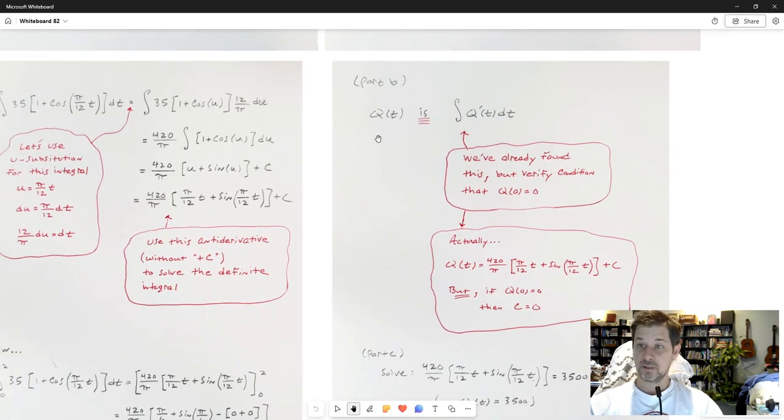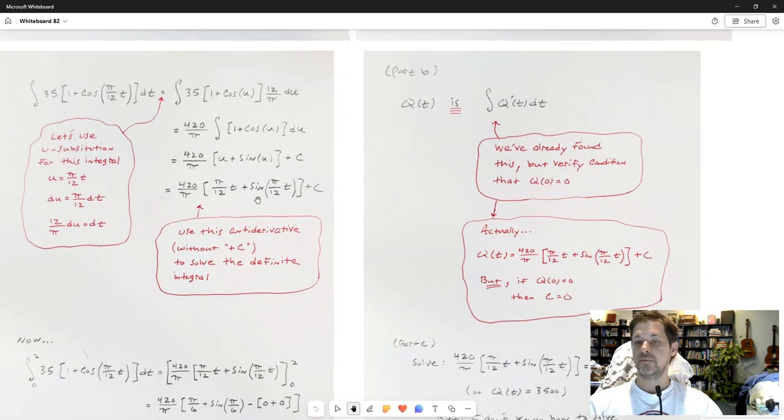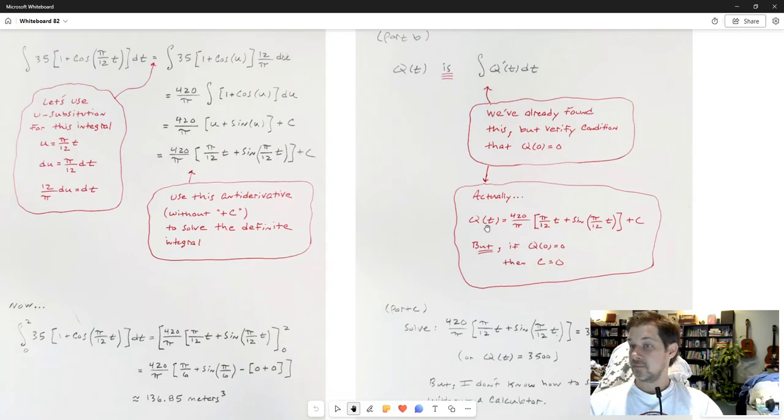If you took the derivative of this, you would. But see that plus c right there, that could be plus any constant. No matter what that number is, you know, I get all this stuff, but plus any fixed number. If that was plus 7, the derivative of this would still give you that. That's why plus c is a generic constant, because no matter what constant I add on the end of this, it will check out as the antiderivative. I'll need that number to verify my condition that q(0) equals 0.